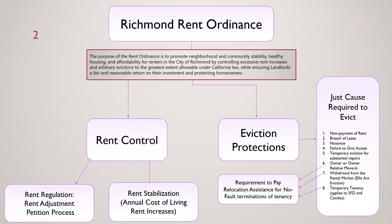Rents are also regulated through the Rent Adjustment Petition process, which allows landlords and tenants to file rent increase or rent decrease petitions. The other main component of the rent ordinance are its eviction protections, or the requirement to have just cause to terminate a tenancy. Tied to the rent ordinance is the Richmond Relocation Ordinance, which requires payment of temporary or permanent relocation assistance to tenants evicted for a no-fault just cause, such as owner move-in or withdrawal from the rental market. The Richmond Rent Program administers and enforces both the rent control and just cause for eviction sections of the rent ordinance.